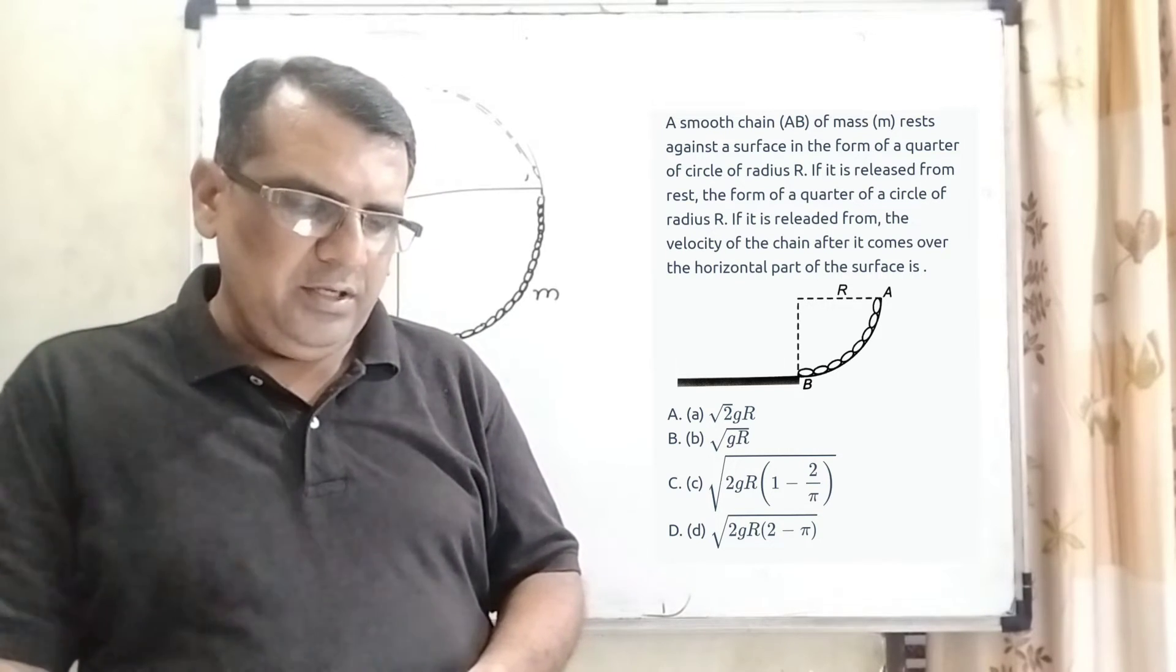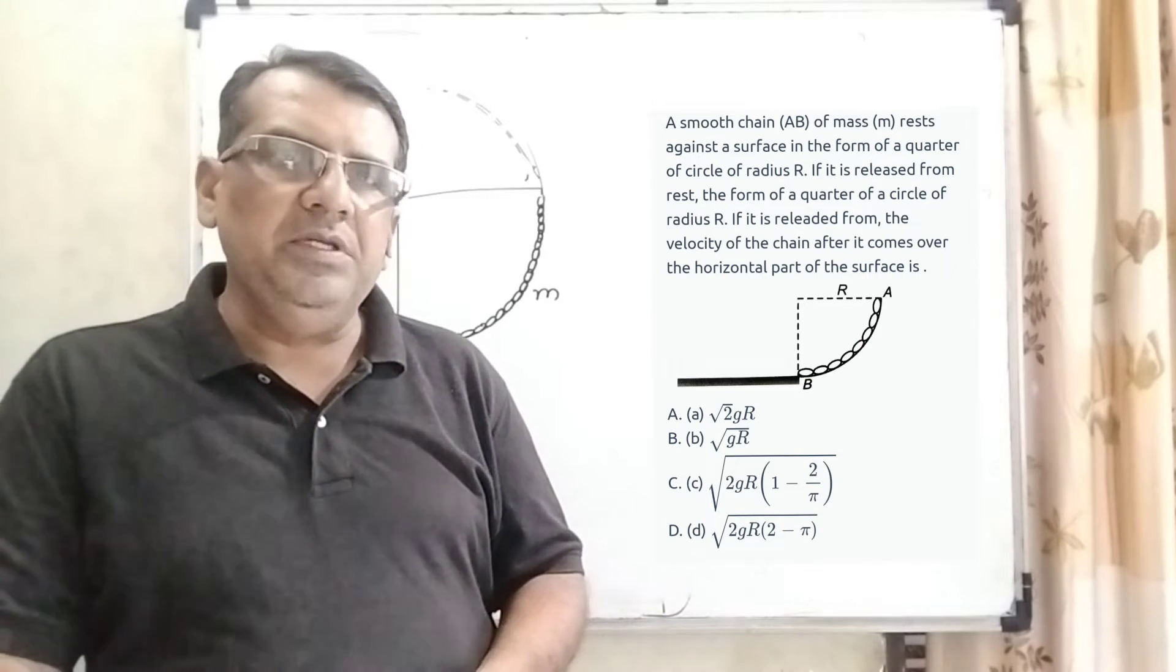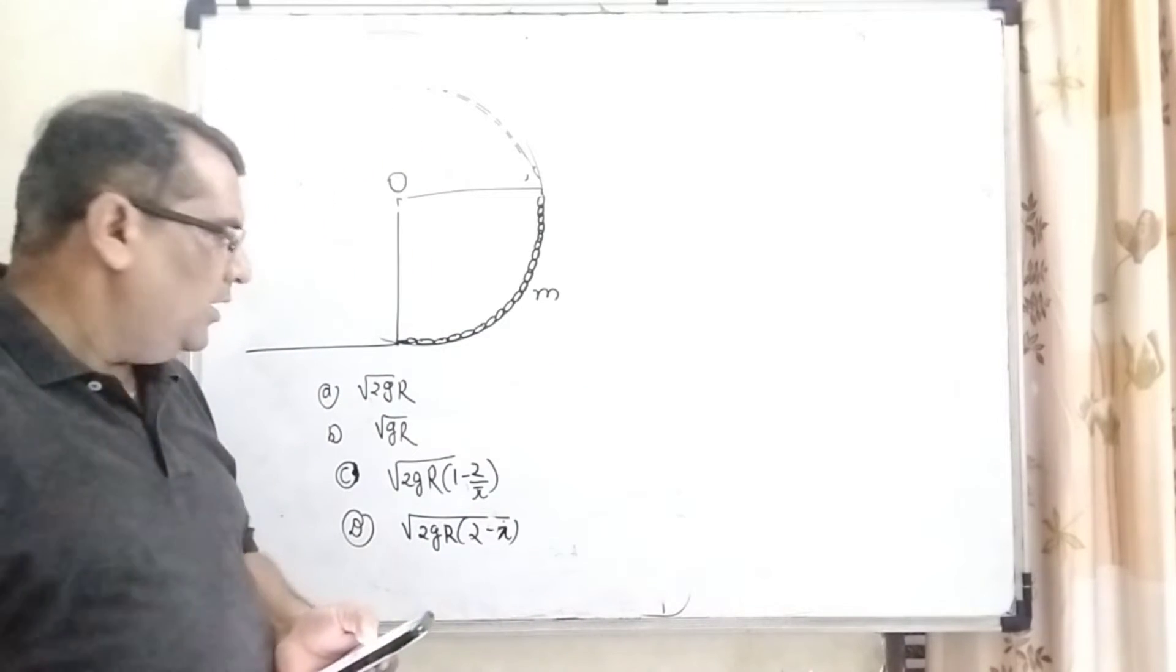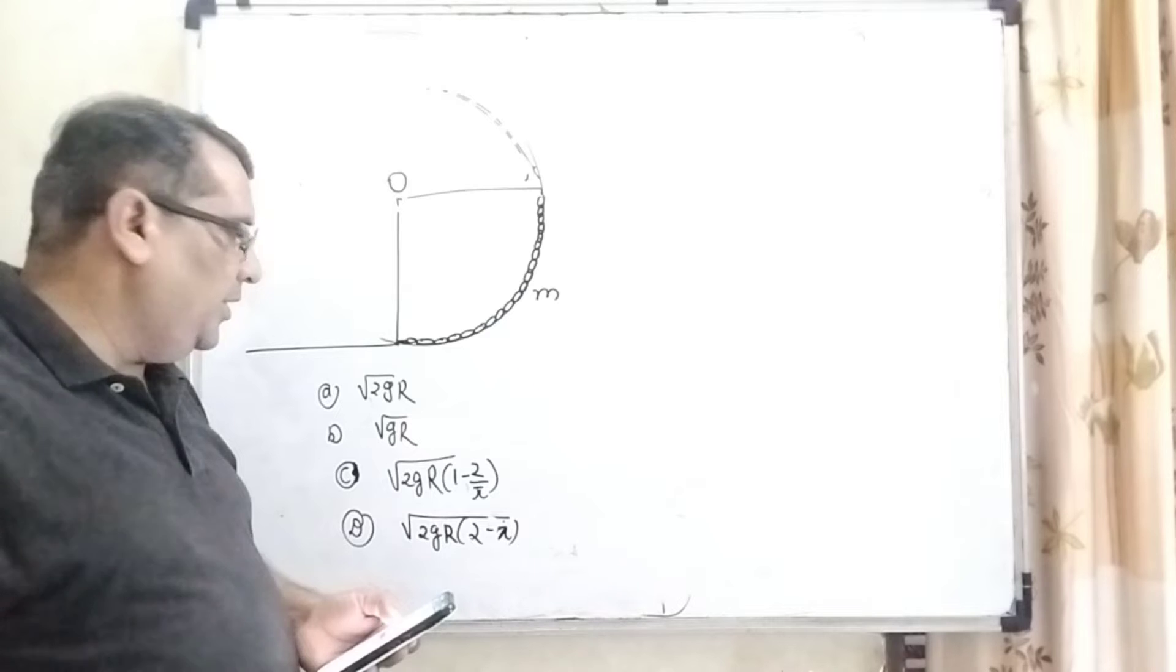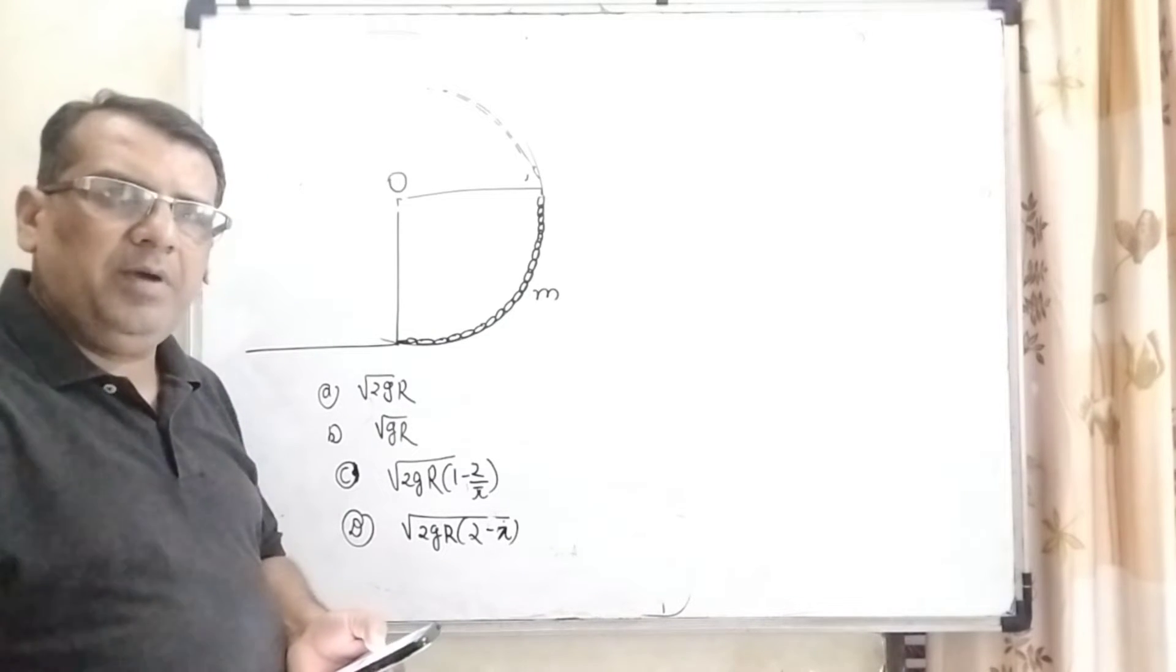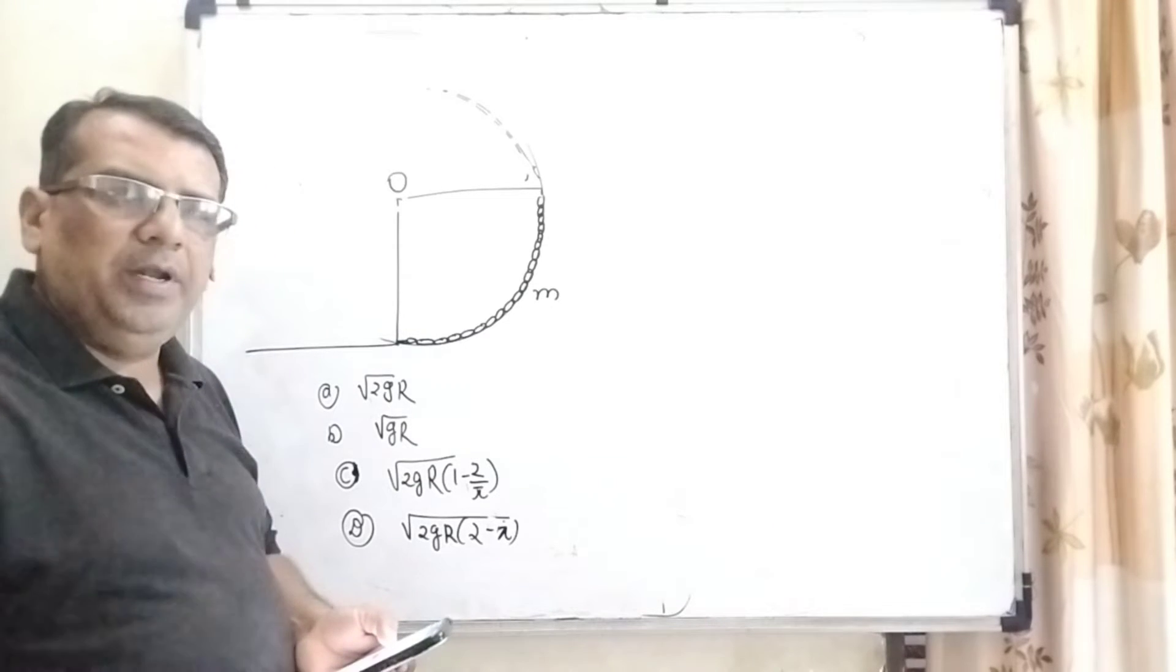We have to find out the velocity. According to the options: Option A equals root 2gR. Option B, root gR. Option C, root 2gR into bracket (1 minus 2 by pi). And option D, root 2gR into bracket (2 minus pi).